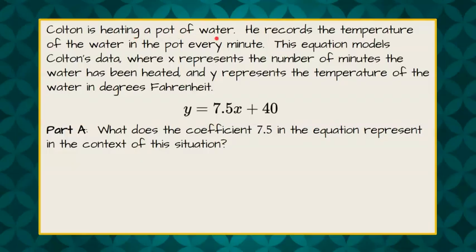Colton is heating a pot of water. He records the temperature of the water in the pot every minute. This equation models Colton's data where x represents the number of minutes the water has been heated, and y represents the temperature of the water in degrees Fahrenheit: y equals 7.5x plus 40.